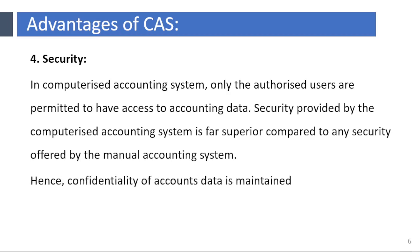Security. Under a manual accounting system, it is very difficult to secure such information because it is open to inspection by any eyes dealing with the books of accounts. However, in a computerized accounting system, only authorized users are permitted to have access to accounting data. Security provided by the computerized accounting system is far superior compared to any security offered by the manual accounting system. Hence, confidentiality of accounts data is maintained.